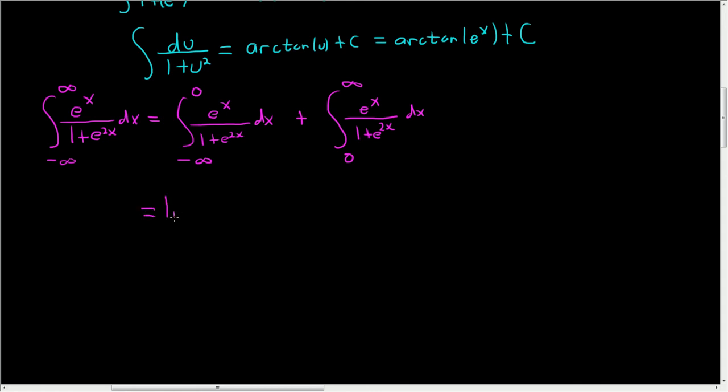This is equal to the limit as b approaches negative infinity of integral that goes from b to 0 of e to the x over 1 plus e to the 2x dx plus the limit. Now you can use another letter. Let's be sloppy and use b again. It doesn't really matter. It's kind of like a dummy variable. So 0 to b. And then here we have e to the x over 1 plus e to the 2x dx.